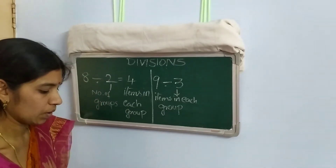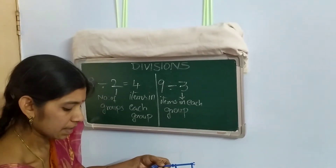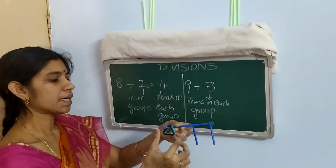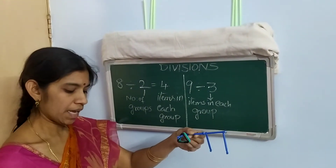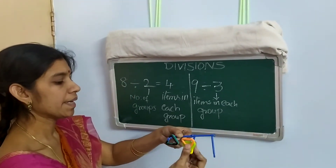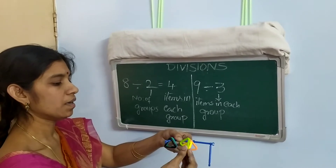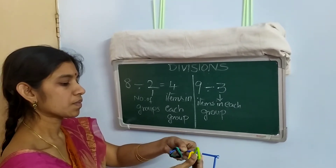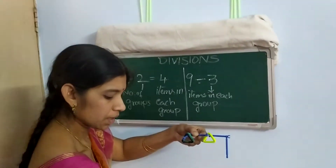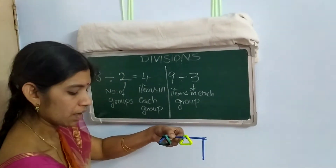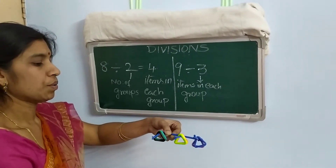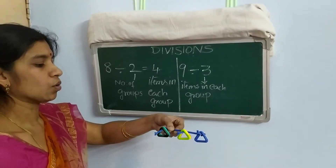From this, what I am doing is I am taking three triangles — one, two, three. These three triangles I made into one group. Again, from the remaining triangles, I am taking three triangles as a group — one, two, three. Another group is formed. Still there are triangles, so again I am making one more group with three triangles — one, two, three. So I found another group also.